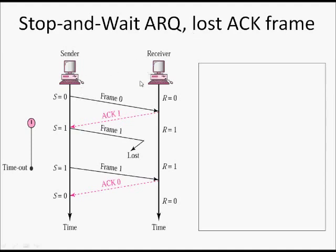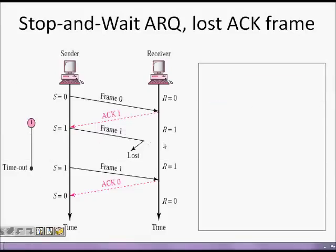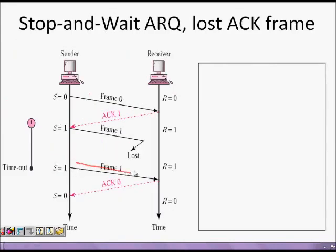Now let's see stop-and-wait ARQ — automatic repeat request. What happens if a frame is lost? I send frame 0, receiver sends ACK 1, then I send frame 1 — but the packet is lost. When I sent frame 1 I started a timer, and after, say, two seconds with no acknowledgement received, a timeout occurs and I retransmit frame 1. The receiver then receives frame 1 and sends ACK 0.